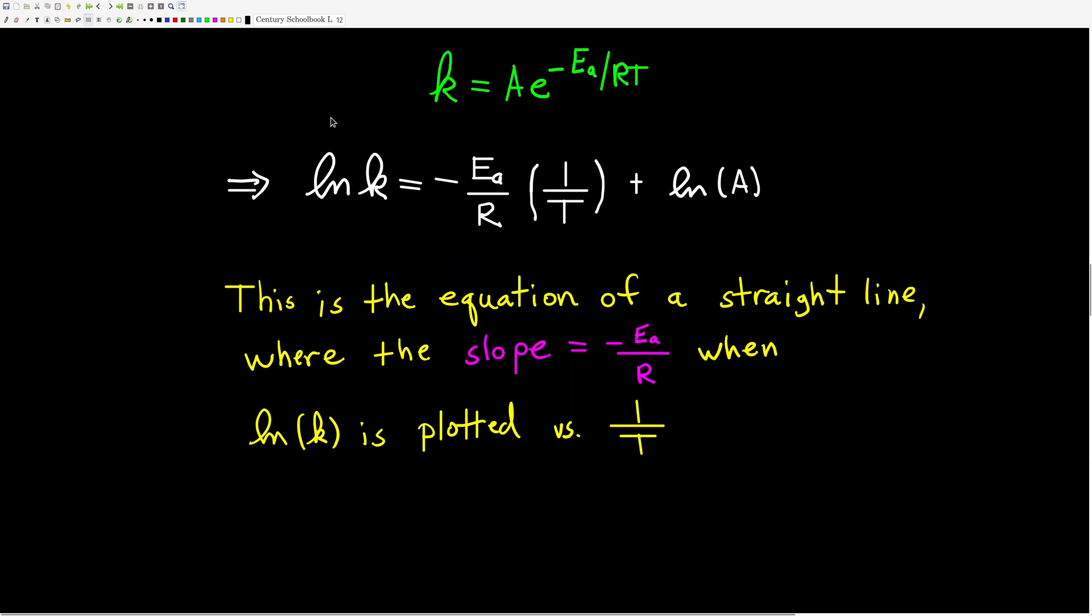If we take the natural log of both sides of the Arrhenius equation, we get minus Ea over R, 1 over T, plus natural log of the frequency factor A. This is something that we know and love, the equation of a straight line, y equals mx plus b. If we plot the natural log of the rate constant versus 1 over the temperature in Kelvin, we will get a straight line whose slope is negative activation energy over R, and whose y-intercept is natural log of the frequency factor.